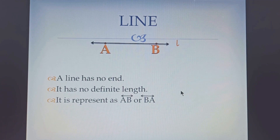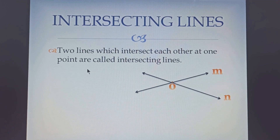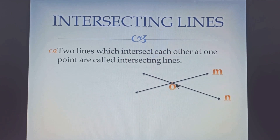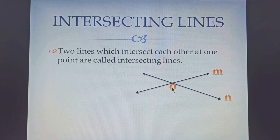Now let us see what intersecting lines are. When two lines intersect each other — that is, cross each other at one point — they are called intersecting lines. Like here we are having line M and line N, and both lines are crossing each other. The point where they cross is called point O, and these two lines are called intersecting lines, and point O is the point of intersection.